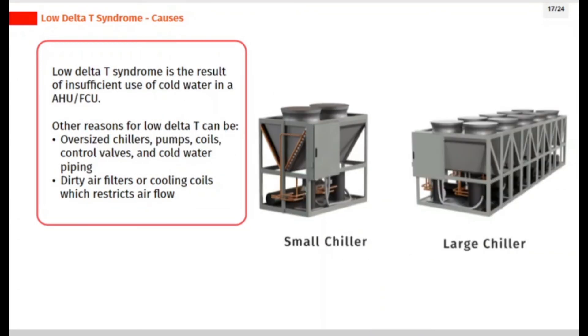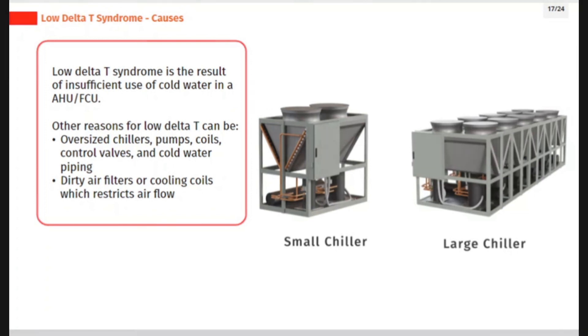Low delta T syndrome is the result of insufficient use of cold water at AHU or FCU. Other reasons for low delta T can be oversized chillers, pumps, coils, control valves, and cold water piping, or dirty air filters or cooling coils which restrict air flow.